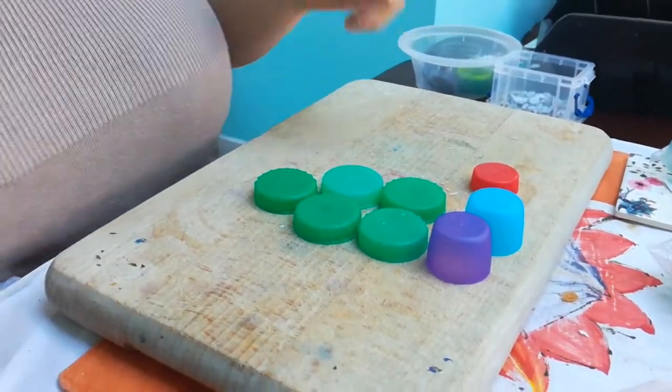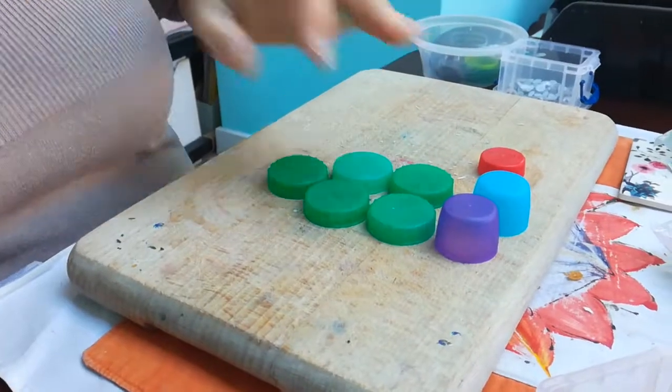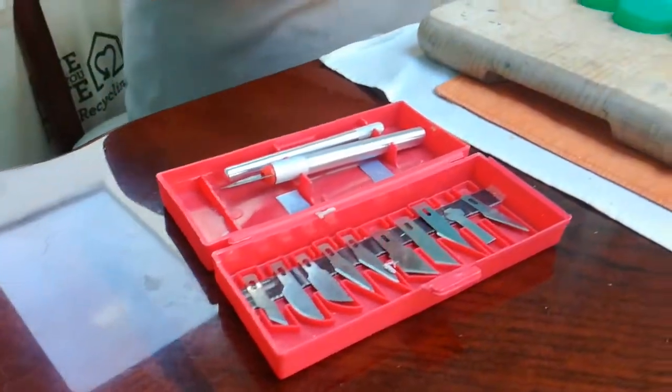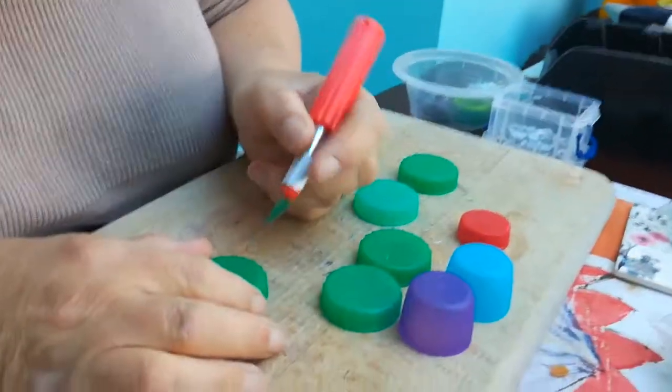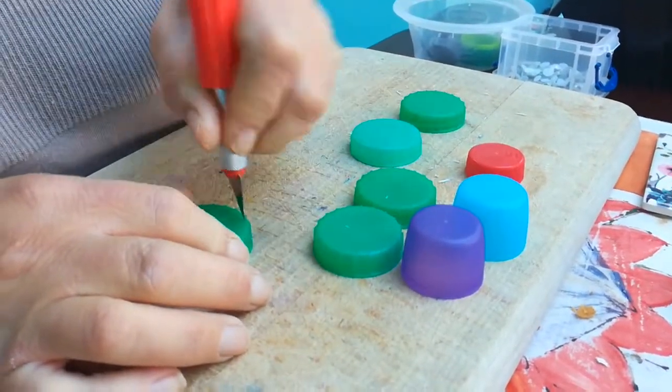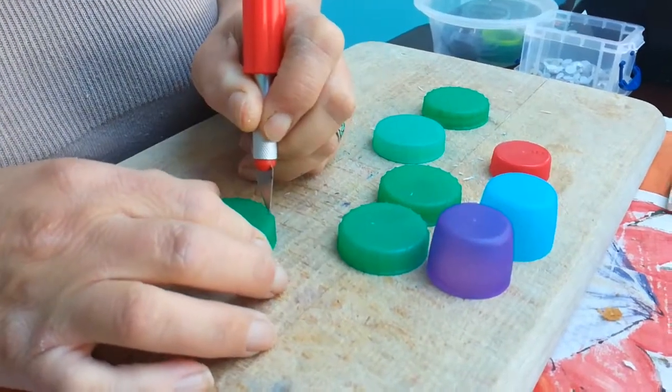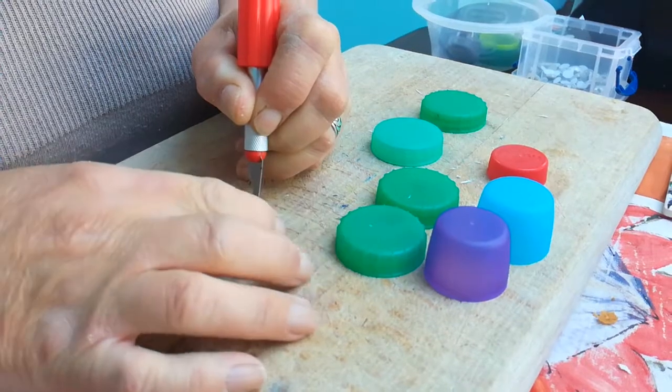So your milk bottle tops, all you do is you take your craft knife and you start with one of these and you very carefully make a little hole and cut.